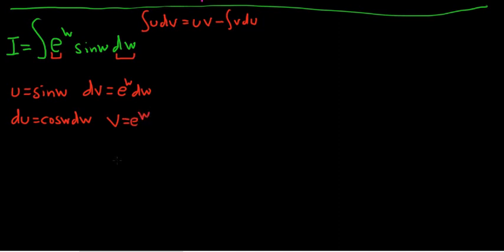All right, now let's apply the parts formula, right? So this is equal to, so it's u v, right? So it'll be e to the w sine w minus the integral of v du. So it'll be the integral of e to the w cosine w dw. All right, so now we do it again.